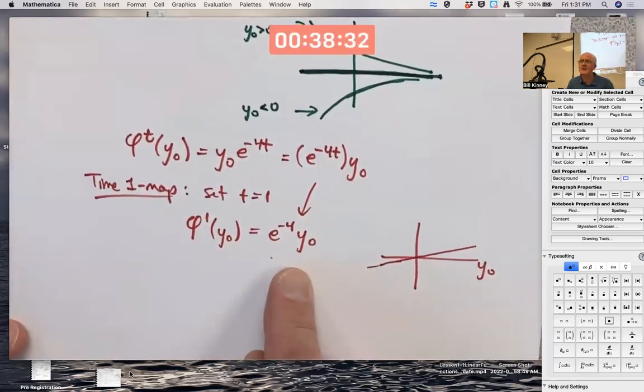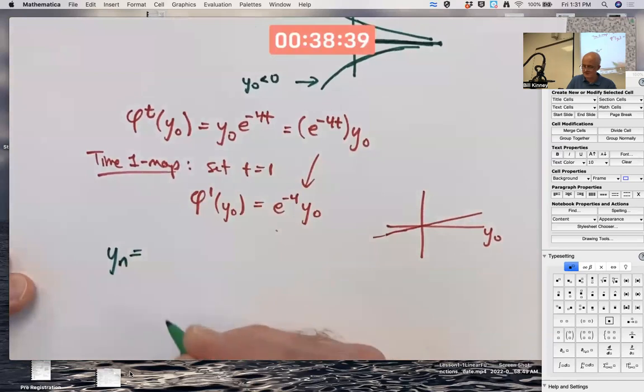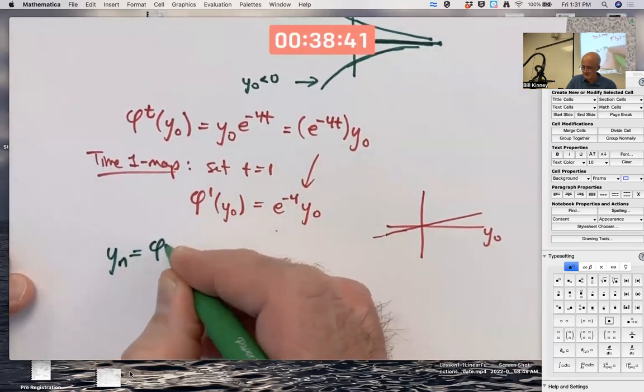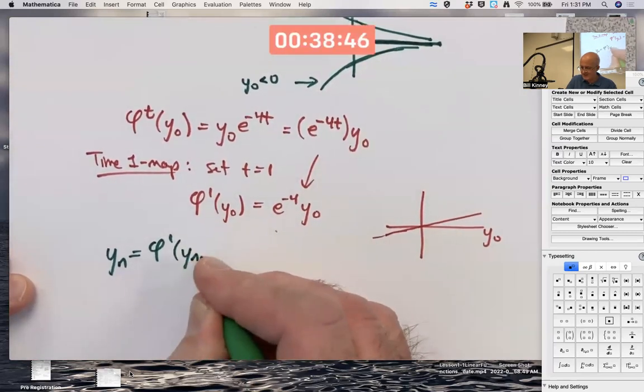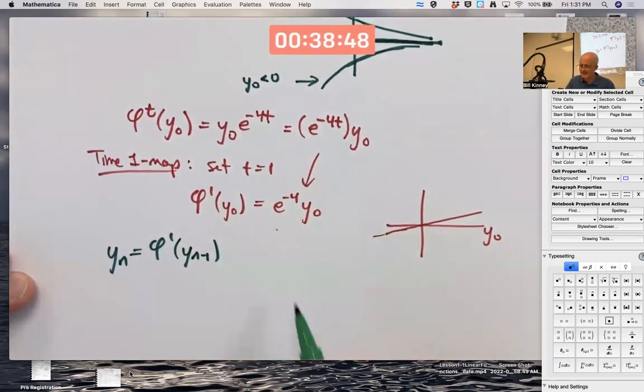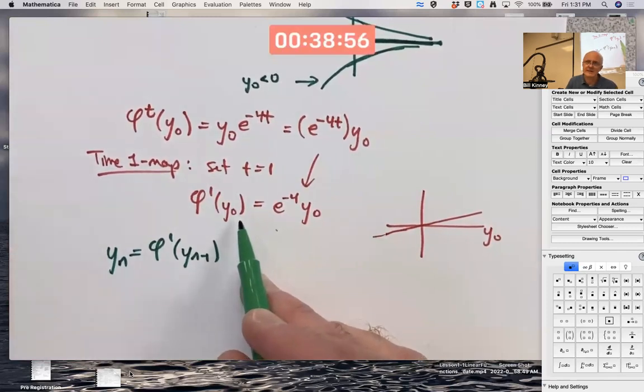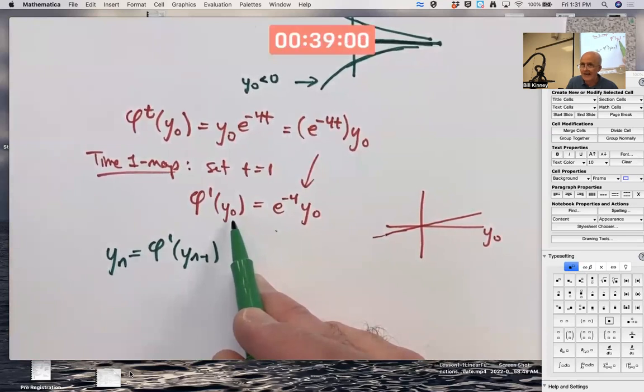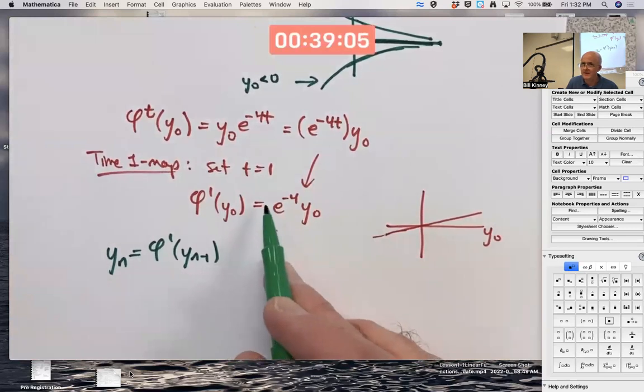With this time one map, you can create a difference equation. y_n equals phi superscript 1 of y_{n-1}. Now, don't be bothered by the fact that here I'm using a y sub 0 and here I'm using a y sub n minus 1. Just arbitrary symbol there, right? In fact, if you do look this kind of stuff up online, oftentimes they don't put the subscript there. They just call it a y. I am trying to kind of relate it to the initial condition. So that's why I'm putting the subscript there.